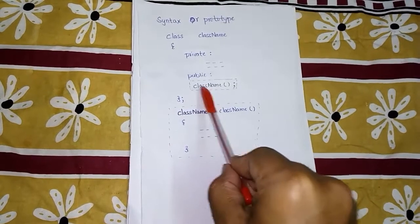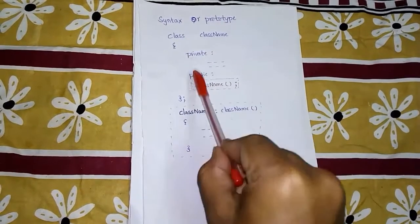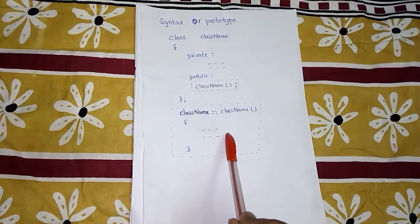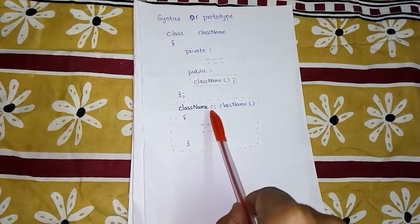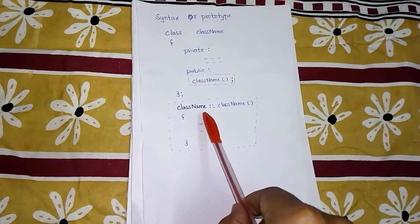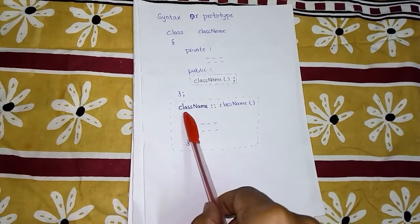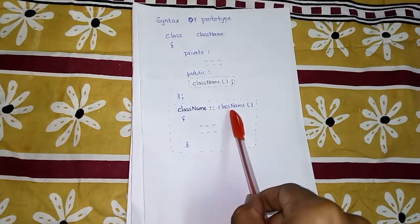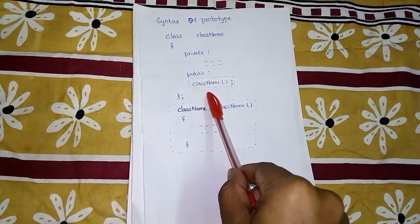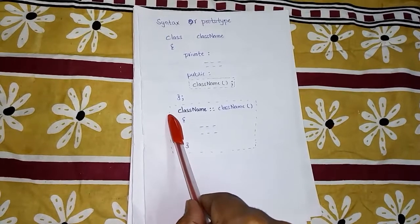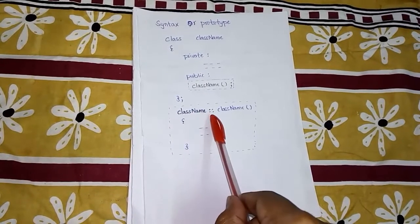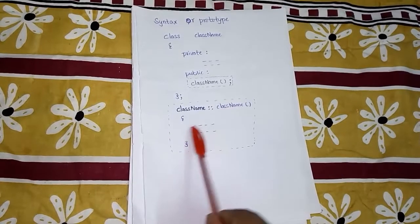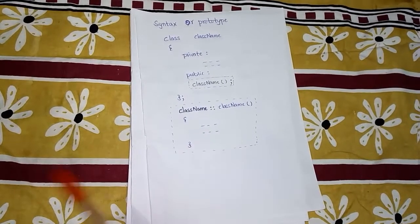If we don't define the constructor inside the class, we have to define it outside. To define a function outside the class, the syntax is: return type, class name, scope resolution operator, function name. Since a constructor has no return type, we write: class name, scope resolution operator, class name — because the constructor name is the same as the class name.